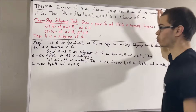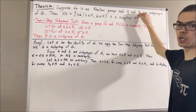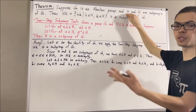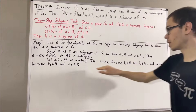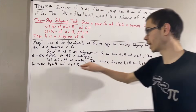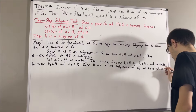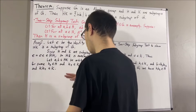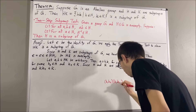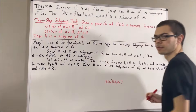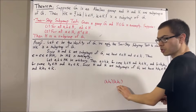Now, since h and k are subgroups of g, we know that h and k are both closed under the operation of g. So, if we multiply any two elements of h together, the result is an element of h. If we multiply any two elements of k together, the result is an element of k. So, in particular, h1 h2 must be an element of h, and k1 k2 must be an element of k. This means h1 h2 times k1 k2 fits the form to be an element of hk. But the claim is that a times b is equal to h1 h2 times k1 k2, so let's show that.